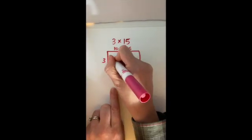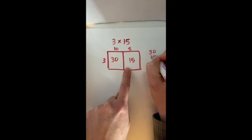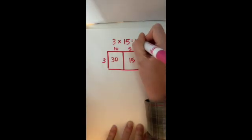Now I'm going to multiply out each of the parts. 3 times 10 is 30, and 3 times 5 is 15. Add them all together and what do you get? I get 45. So 3 times 15 is 45.